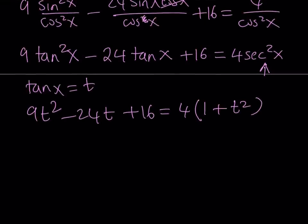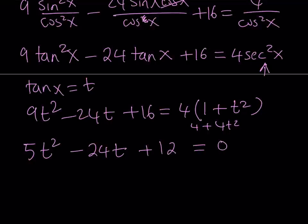Let's distribute everything. From here, I'll be getting 4 plus 4t squared. If you subtract 4t squared, you get 5t squared, and then minus 24t. Here, 16 minus 4 is going to give us positive 12. So this is going to be my quadratic equation in t or tangent x.